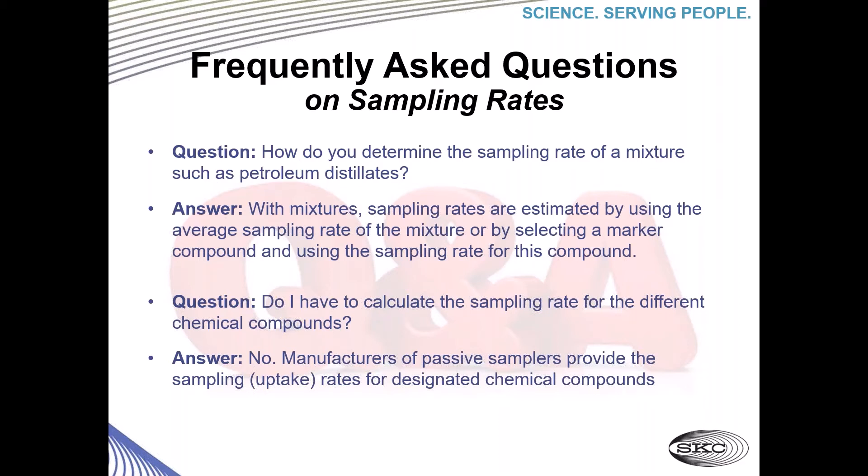Do I have to calculate the sampling rate for different chemical compounds myself? Fortunately, the answer is no. Manufacturers of passive samplers like SKC provide sampling or uptake rates for the designated chemical compounds, so you do not have to do the math and do the formulas — it's done for you.